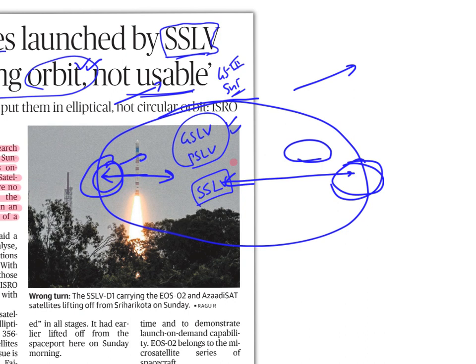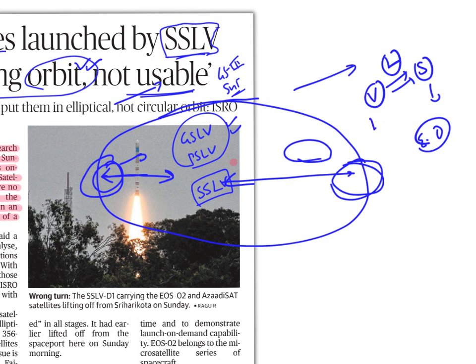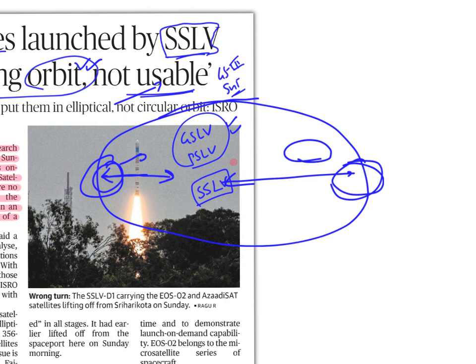Now, what is a launch vehicle? A satellite needs to go to space to revolve around Earth. The vehicle used to launch these satellites into Earth's orbit is called a launch vehicle — what we commonly call a rocket. We now have three kinds: earlier we had only GSLV and PSLV, and today we have the third kind, which is SSLV.